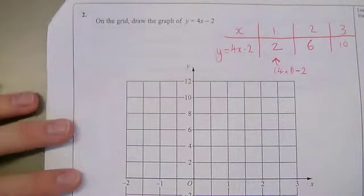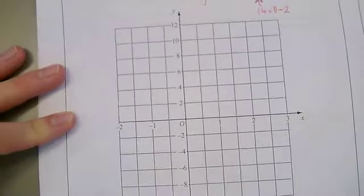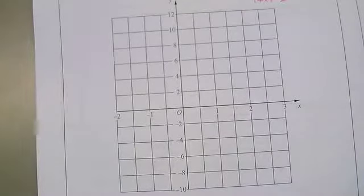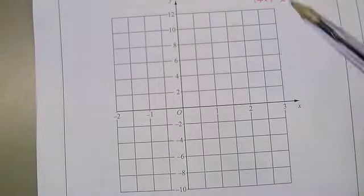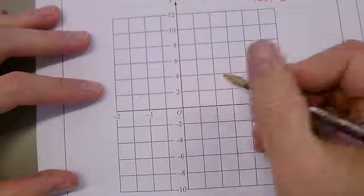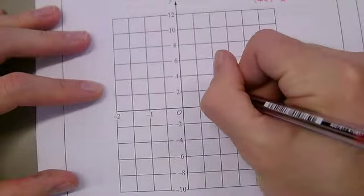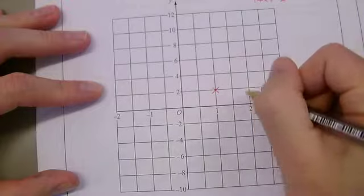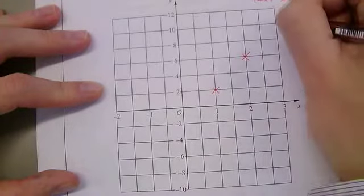When you plot this, make sure you're plotting correctly. Luckily for us, they've actually gone and drawn the scale in. Remember, x is the one going across, y is the one going up. So we're going to plot one, two - across to one, up to two. Across to two, that's six. And across to three and up to ten.